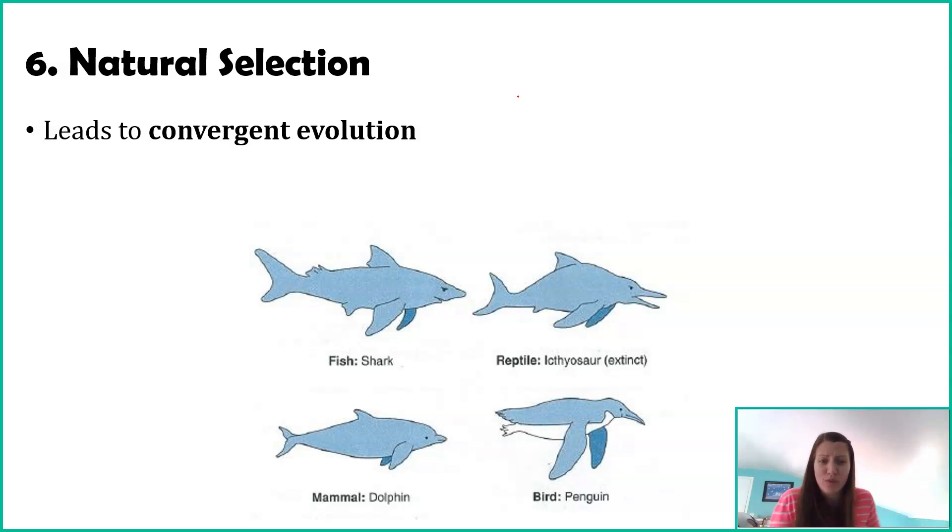What happens with natural selection is that very different organisms. In this picture, I've got a mammal, a fish, a reptile, a bird, very different organisms. Looking at them, they have a lot of similarities. They have these nice streamlined bodies. They all have flippers. They're all like a bluish, grayish, blackish color. And it's not because these guys have a common ancestor. It's not because sharks and penguins are related. And so of course they look similar. No, these are very different organisms. The reason they look similar is because of natural selection. It's because they all live in the same habitat and natural selection kept favoring similar traits.